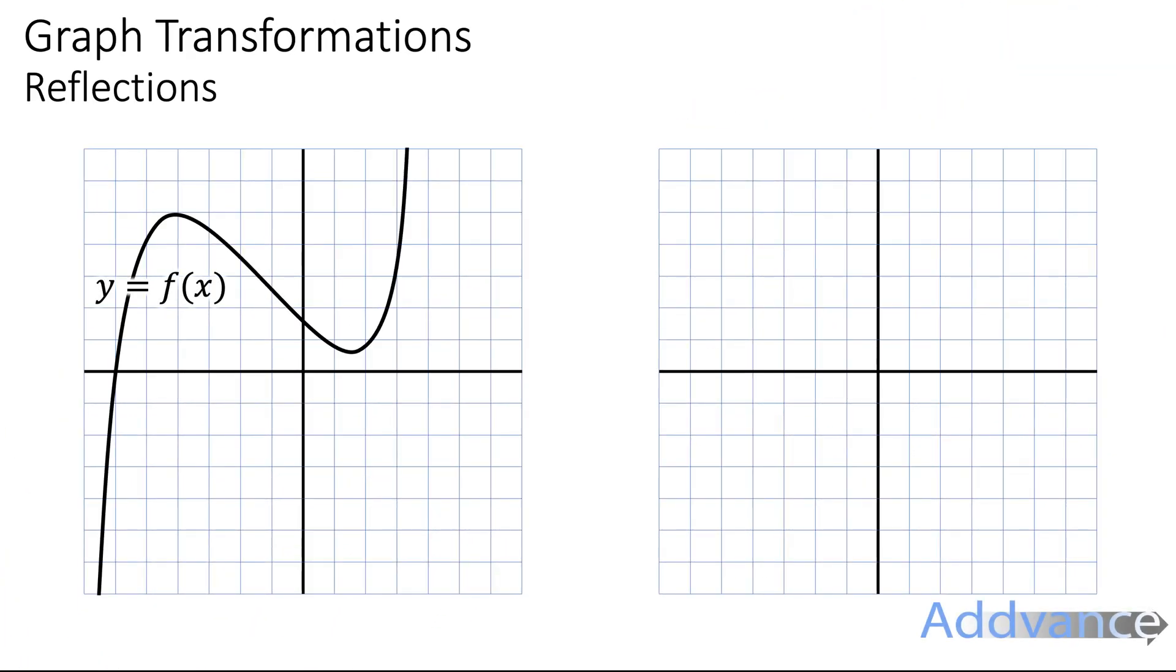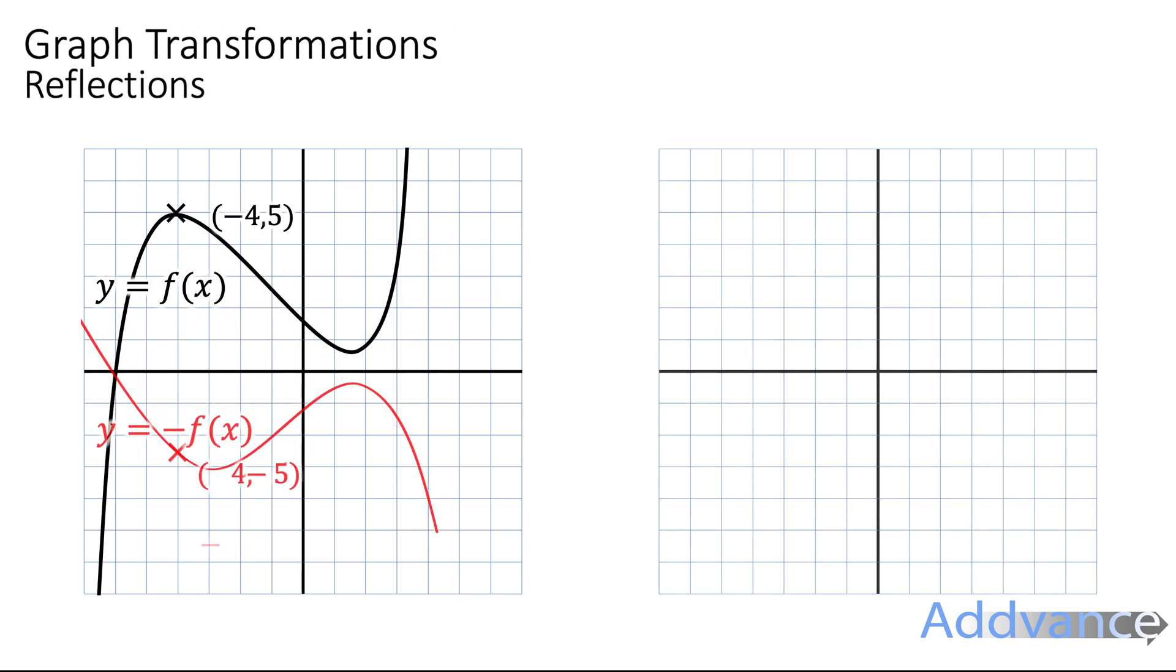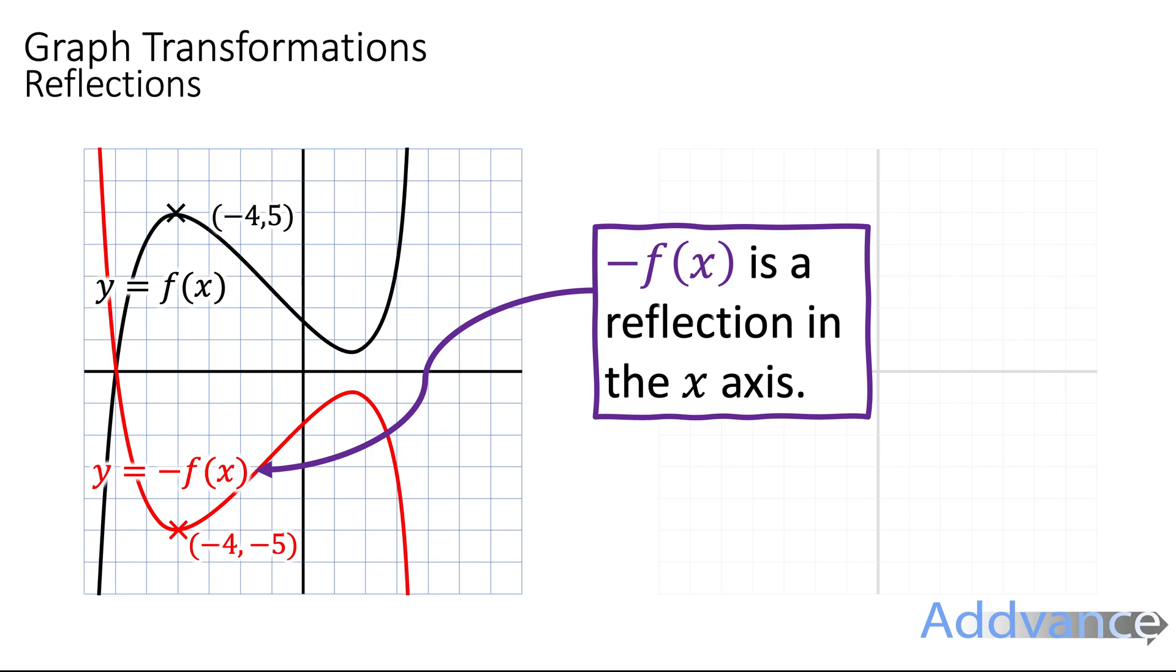Okay, here we've got a graph f of x and we've got this coordinate minus four, five. We're going to reflect this and the way we reflect it is just by making the entire graph negative. So y equals minus f of x will make the entire graph negative.